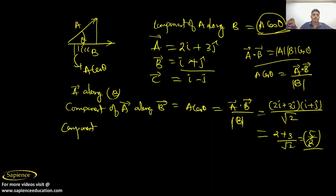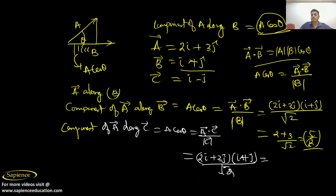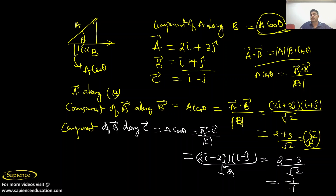Similarly, the component of A along vector C equals A·C divided by the magnitude of C. A·C equals (2i + 3j)·(i - j), and magnitude of C is root 2. Calculating: 2 times 1 plus 3 times minus 1 gives 2 minus 3 equals minus 1. So the component of A along C equals minus 1 divided by root 2.